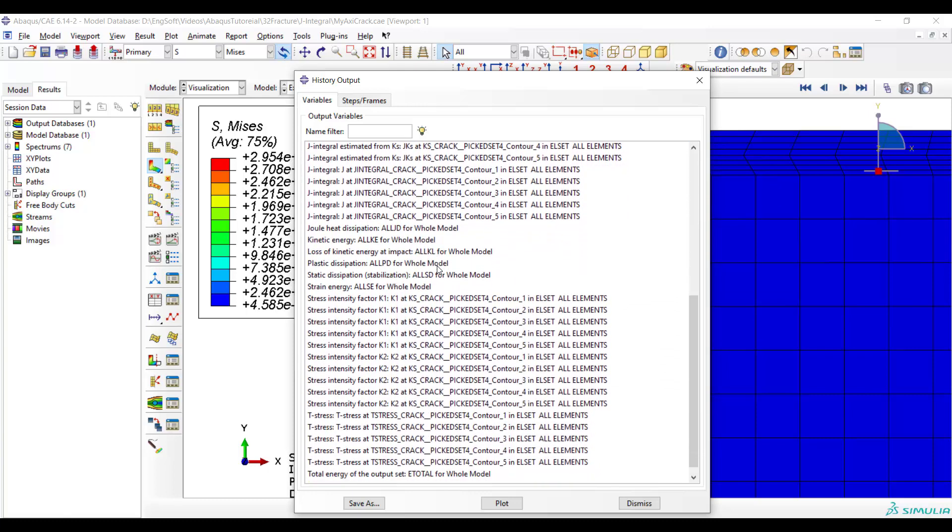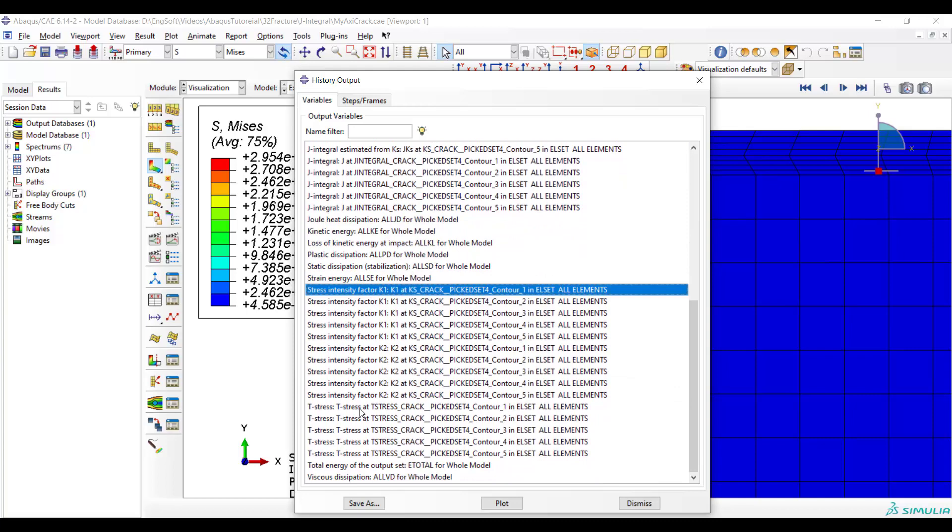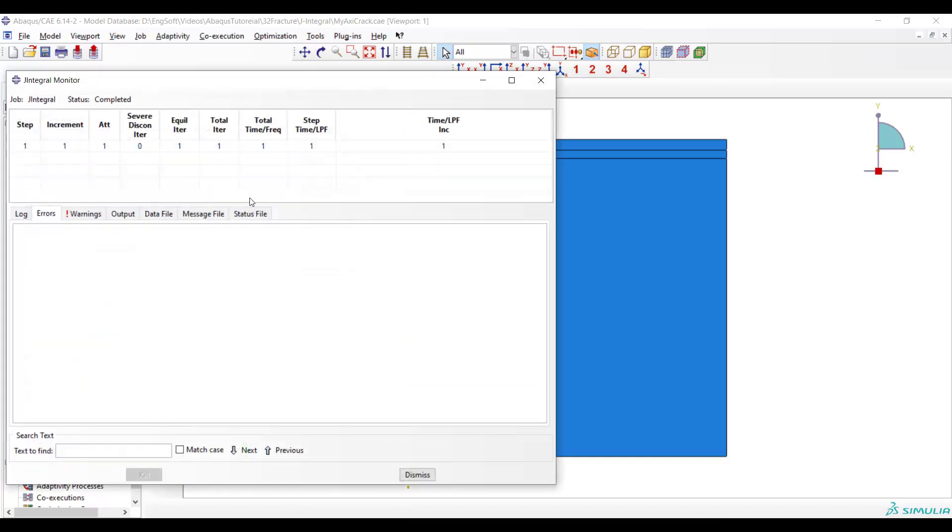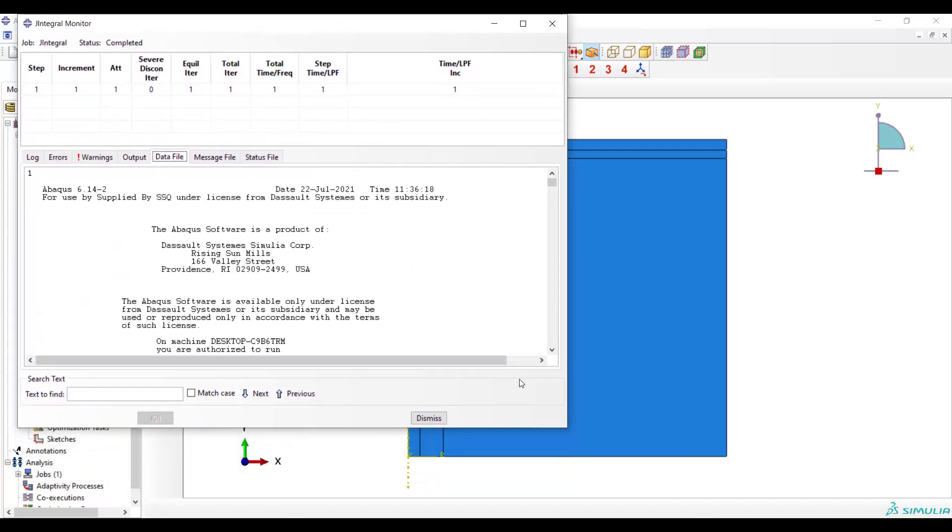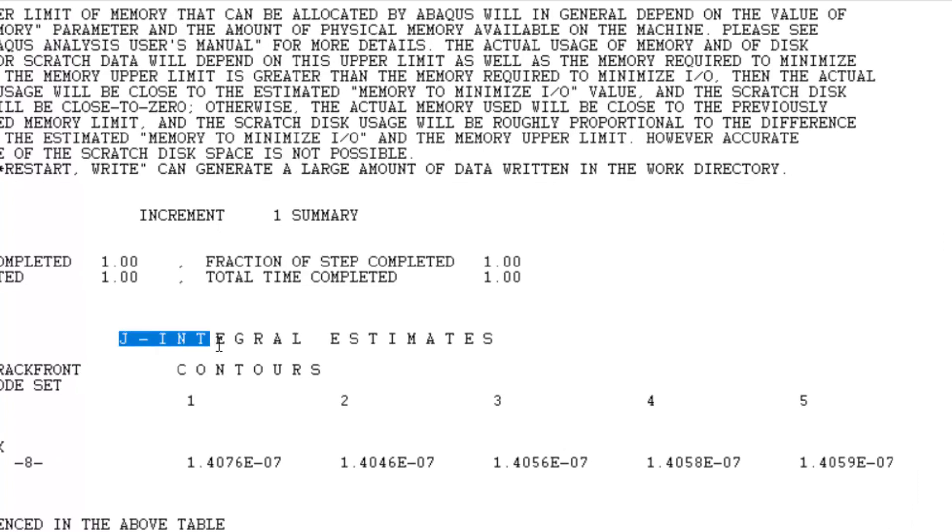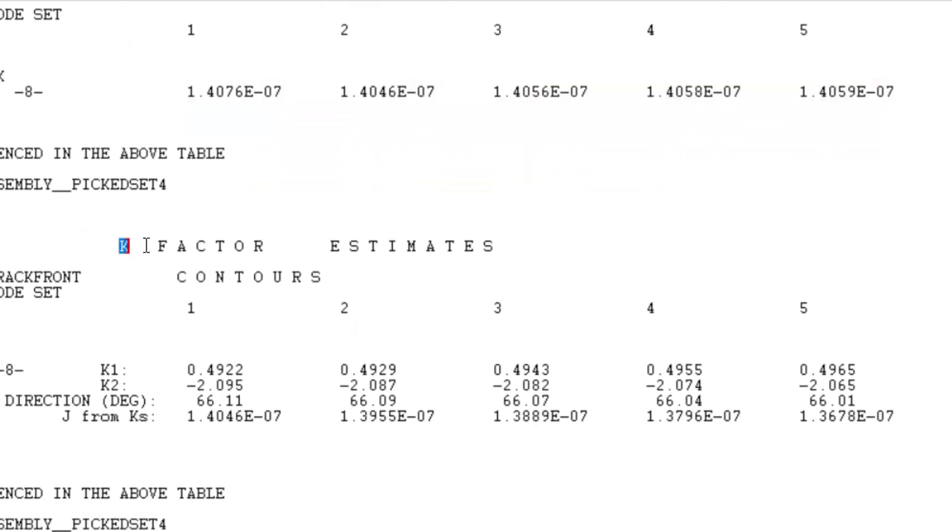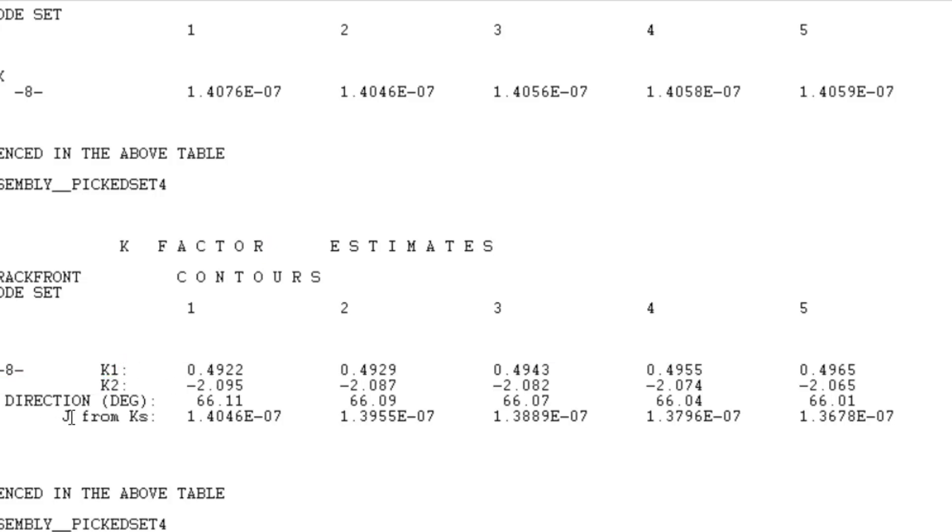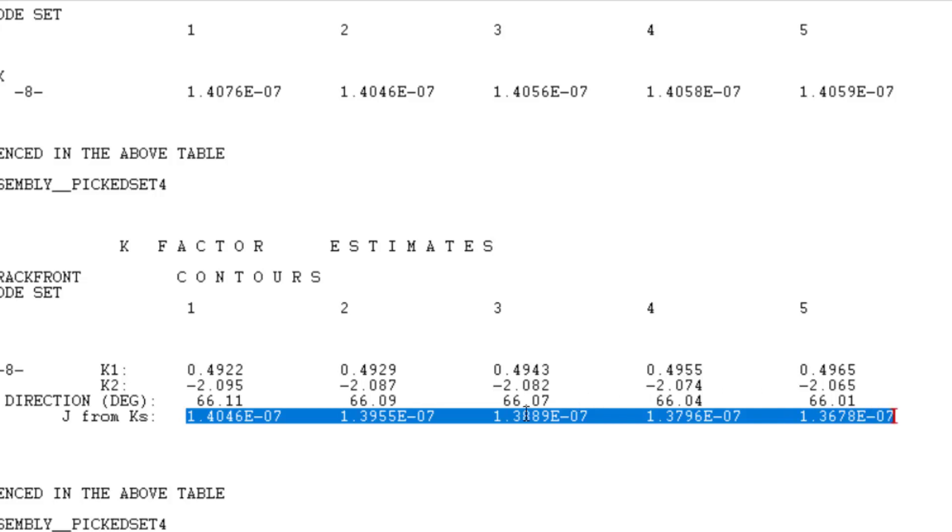We can find K1, K2 and T-stress and J-integral in history output. Another way is to use DAT file. In this file we can find all of these parameters. Here are J-integrals from five different passes which are close to each other. And then K factor K1 and K2 which are also close together. And then angle between the crack propagation direction and the crack plane. Here we also have calculated J from K factors which is close to the J-integral value. And finally we have T-stress values here.